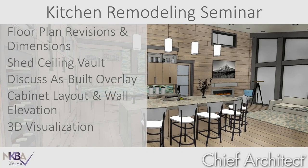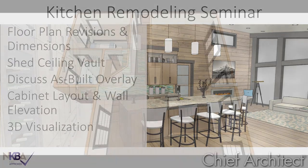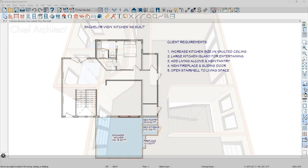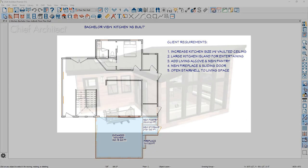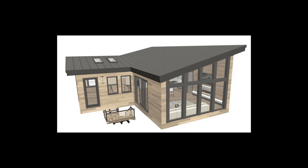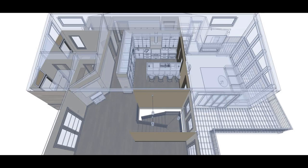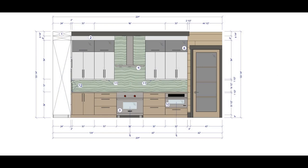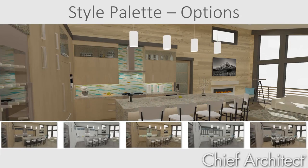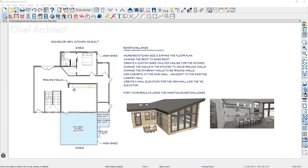In this kitchen remodeling seminar, I'm going to take the original floor plan and enlarge it to meet the client's requirement for a larger kitchen space. I'll begin the process by expanding the as-built floor plan to the larger footprint and placing the dimensions. Then I'm going to go through the process of changing the roof to a shed style to support a new vaulted ceiling. I'll briefly discuss using an as-built overlay to superimpose over the remodel project. I'll place the cabinets, appliances, and fixtures along the back wall and then create a wall elevation with the dimensions. You can complete these same steps using our Chief Challenge plan, which you can download from our user forum, Chief Talk.